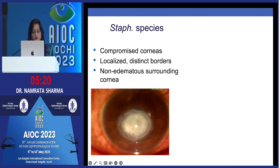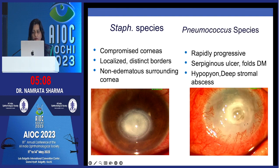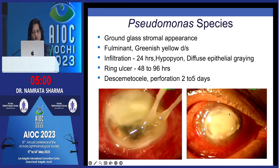Sometimes you can look at the ulcer and identify the organism. A compromised cornea with localized distinct borders and a clear surrounding cornea suggests Staphylococcus. A rapidly progressive serpiginous ulcer with Descemet membrane folds, hypopyon, and deep stromal abscess with edematous surrounding cornea suggests Pneumococcus.